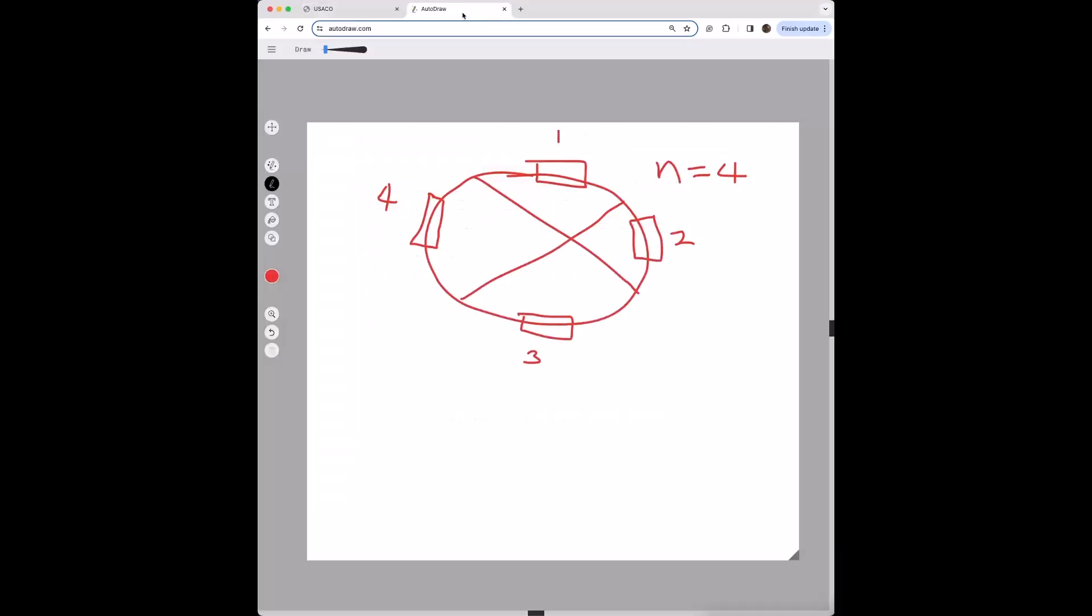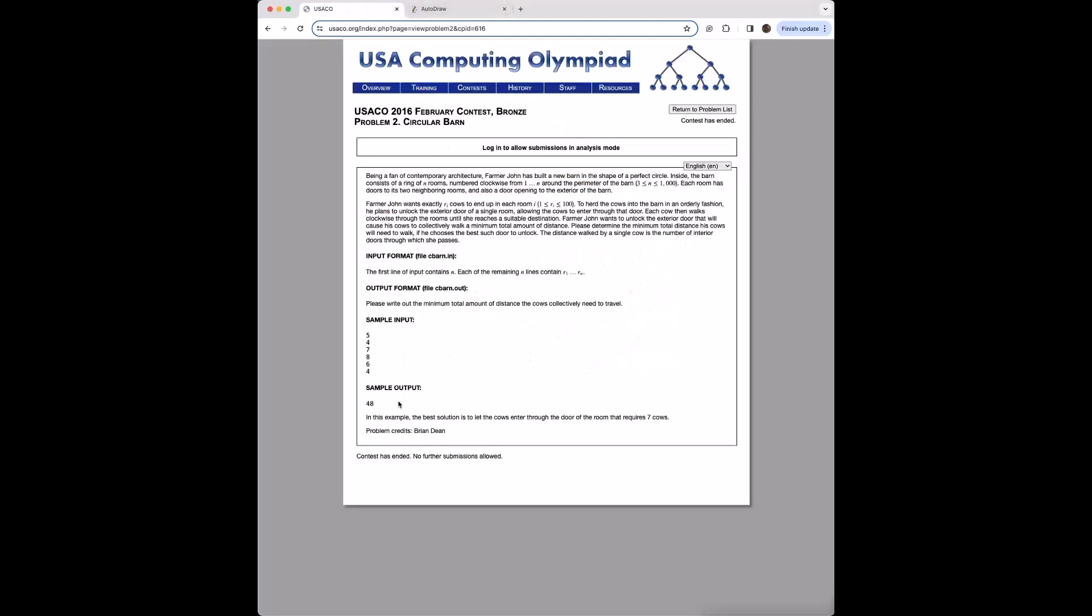Essentially we're going to be looping n times, n being the number of rooms, and for each room we're just going to loop clockwise until we come back to the same room that we started on.